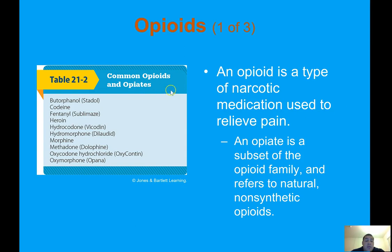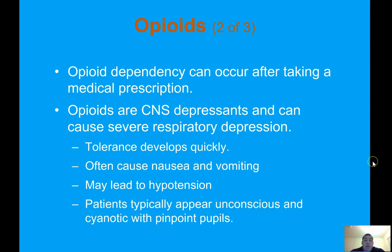Common opioids and opiates — both legal and illegal — include codeine, hydrocodone, hydromorphone (Dilaudid), morphine, and OxyContin. An opioid is a type of narcotic medication used to relieve pain; an opiate refers specifically to natural, non-synthetic opioids. Opioid dependency can occur after taking a medical prescription. Opioids are CNS depressants and can cause severe respiratory depression; tolerance develops quickly. They often cause nausea and vomiting and may lead to hypotension. Patients typically appear unconscious and cyanotic with pinpoint pupils.